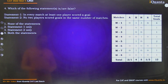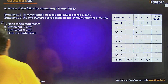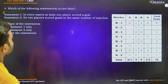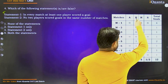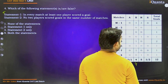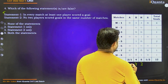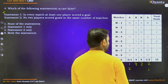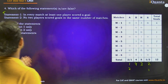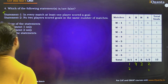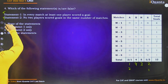Fourth question: Which of the following statements is/are false? Statement 1: In every match, at least one player scored a goal — this was given in the problem, so it is true, not false. Statement 2: No two players scored goals in the same number of matches — Bimla scored in 4 matches, Harita in 3, and Amla and Sarita in 1 and 2 (or 2 and 1) respectively, all different. This is also true. Since both statements are true, none are false. Option 1 is correct.